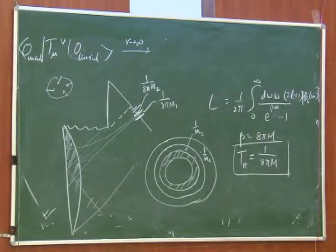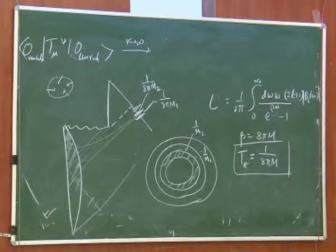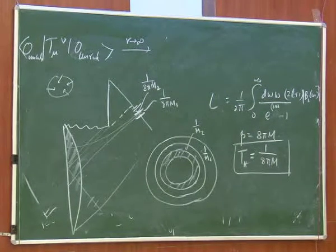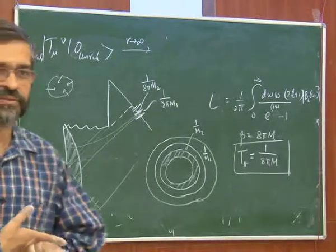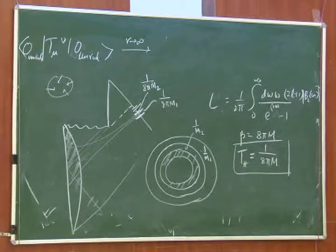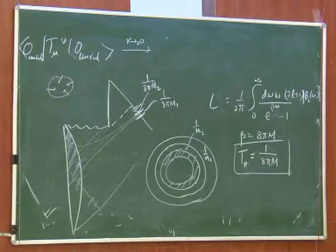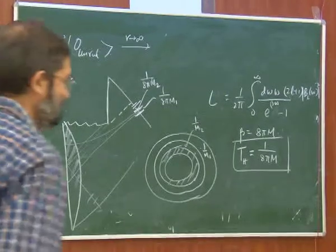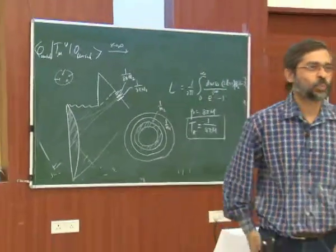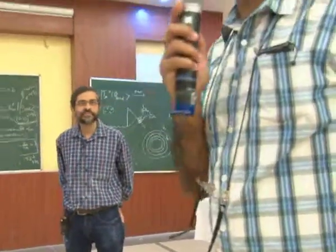There has been a request for me to explain how a microscopic calculation is done of Hawking radiation in the D1-D5 system. I will take some 10 minutes perhaps in the discussion to explain how that is done. Let me stop here. Thank you so much, Kartham.